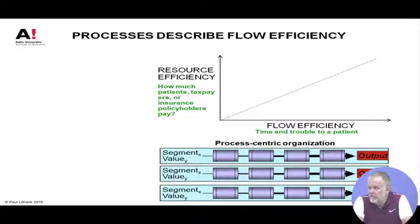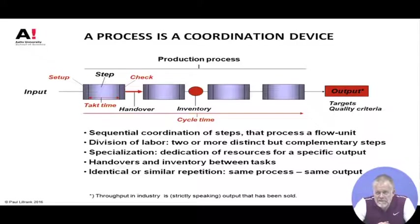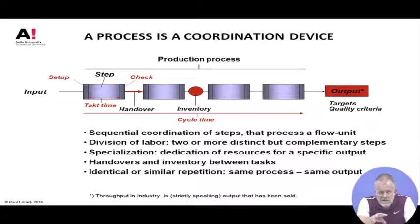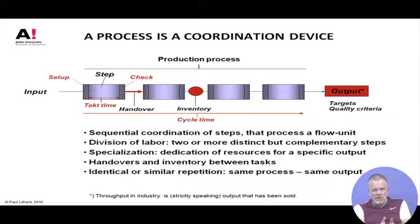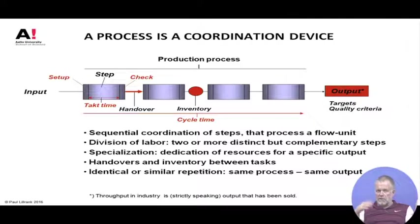The epistemology of flow efficiency is a little more complicated, and that takes us to the question of production processes. A process is one of those plain ordinary English words that everybody believes they know what it means, but very few people understand all the kinds of processes. At the general conceptual level we can say that the production process is a coordination device — an intellectual device, in the same sense as we talked about double-entry bookkeeping earlier.